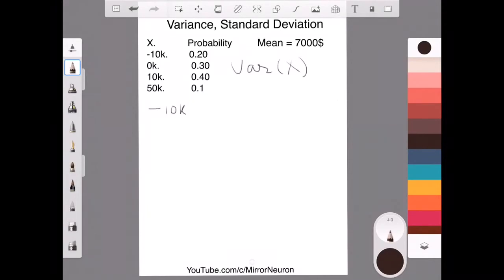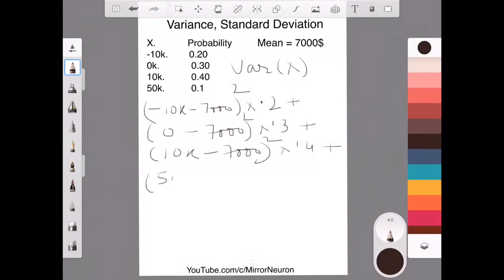So, we have minus 10k minus $7,000 which is the mean, and square that and multiply it with the probability which is 0.2 plus then you have 0 minus $7,000 into 0.3, plus then we have 10k, the positive 10k minus $7,000 whole square into 0.4 plus then we have